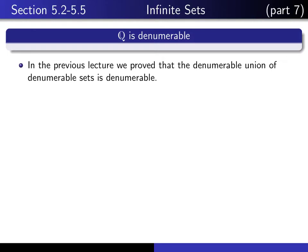In the previous lecture, we proved the key result that the denumerable union of denumerable sets is denumerable, and we're going to show that the theorem that Q is denumerable will follow very easily from that theorem.